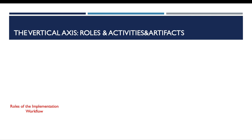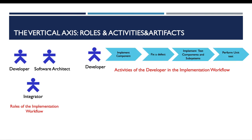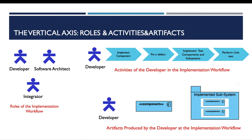Continuing with the vertical axis and roles: I will take the implementation workflow as an example to explain roles, activities, and artifacts. During the implementation workflow, workers may include the developer, the software architect, or the integrator. For activities, the developer may implement components, fix defects, implement test components and subsystems, and perform unit tests. For artifacts, a developer at the implementation workflow may produce a component or an implemented subsystem. An artifact may be a document, a model, or an element of a model.